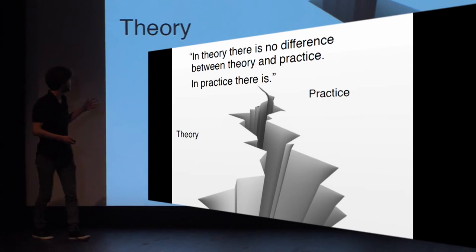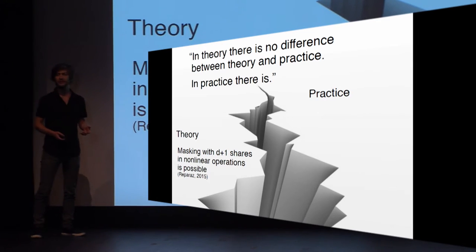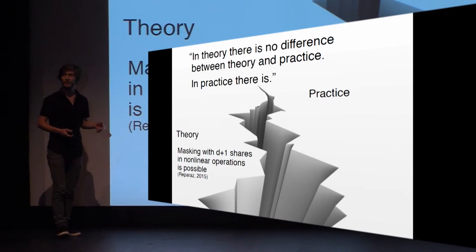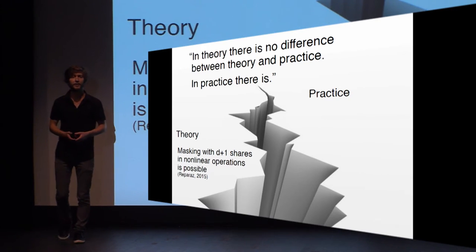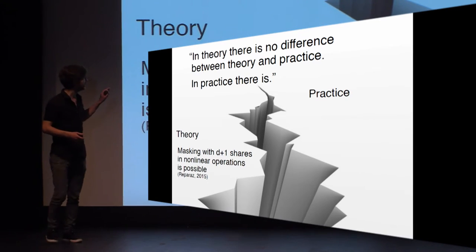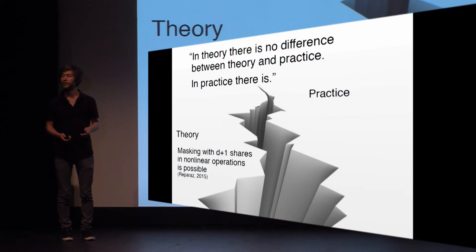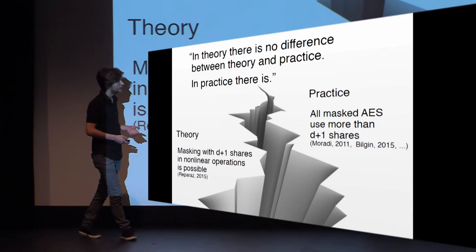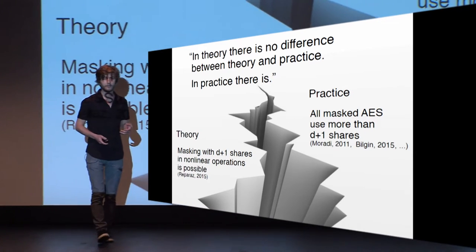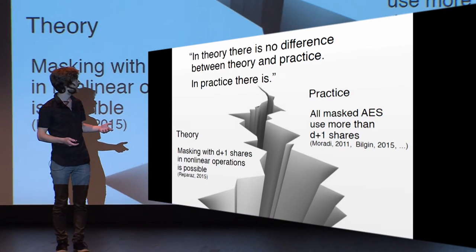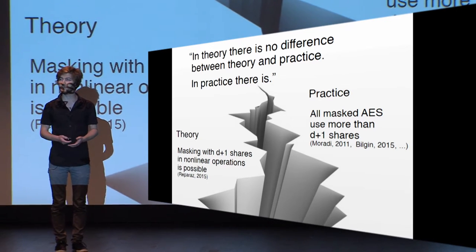Let's look at the theoretical side. We know since Crypto last year that masking with D plus one shares, which is the minimum number of shares required for a D-th order secure implementation, is possible also in nonlinear operations. But looking at the practical side, no implementation — and specifically no masked AES implementation — has yet been published with D plus one shares.